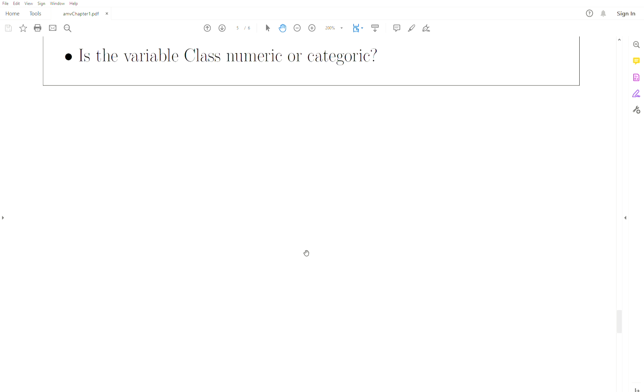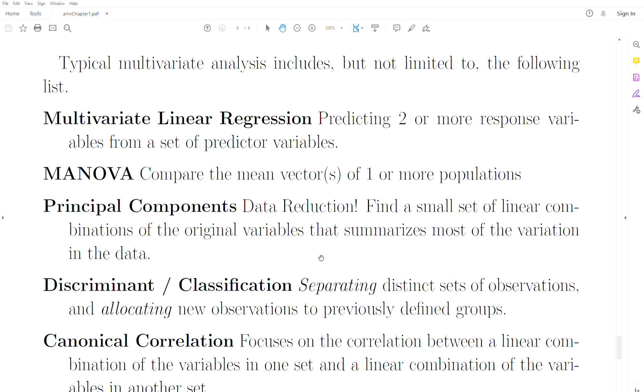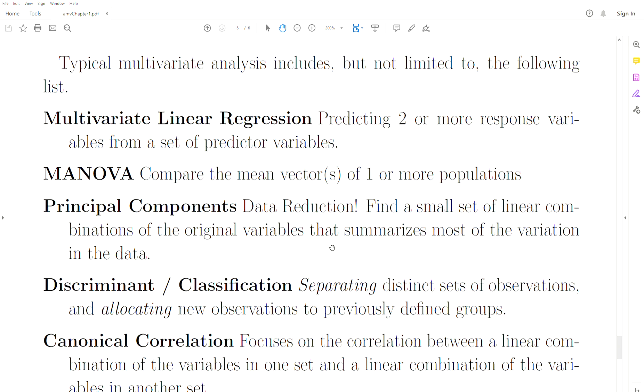The typical things that we're going to examine in this class are multivariate linear regression - so that's predicting two or more response variables. MANOVA - most people have heard of ANOVA, analysis of variance, but you put an M on the front and it's multivariate analysis of variance, where you're comparing mean vectors between populations.